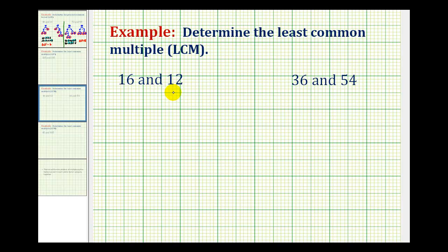In this video, we'll determine the least common multiple by making a list of the multiples of each number. Each method has its advantages over the other. So we'll start by listing multiples of 16, and then we'll list multiples of 12.